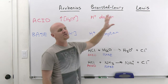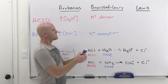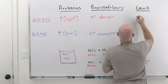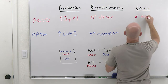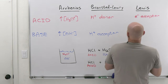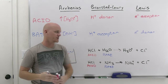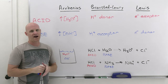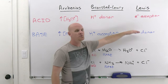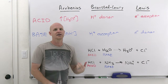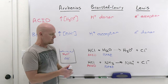Lewis came along and said Bronsted-Lowry's definition is really good, but he has a few acids that Bronsted-Lowry won't classify as acids that he still will. He said it's not about transferring protons — it's all about electrons. Rather than an acid being a proton donor, an acid is an electron acceptor. Rather than a base being a proton acceptor, it is an electron donor — sometimes called an electron pair acceptor and electron pair donor. The idea is that we're making a new bond in an acid-base reaction.